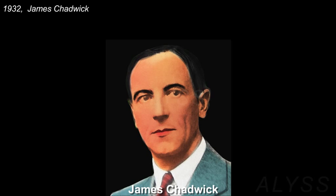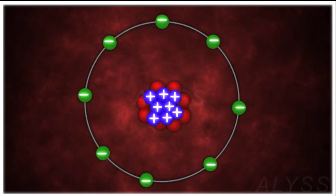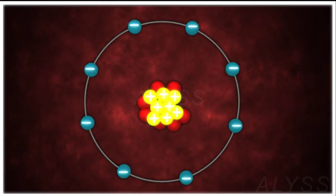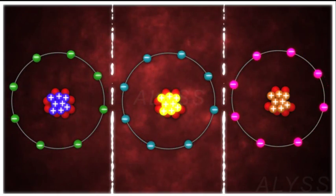It was later, in 1932, explained by James Chadwick, who discovered the neutrons, a neutral charged particle with a mass similar to the proton, and find them responsible for different isotopic forms.